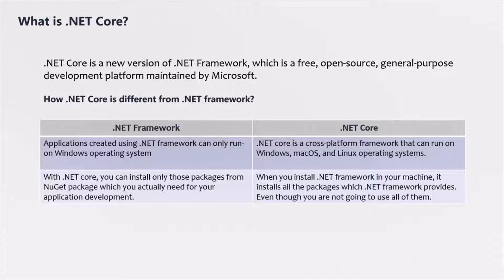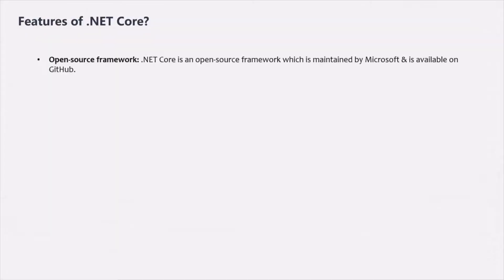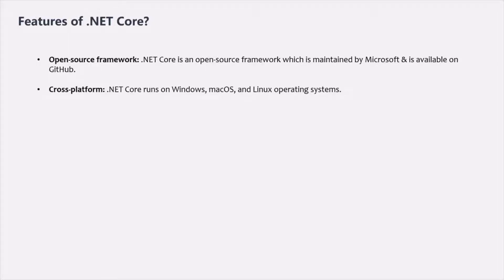Let's see some of the features of .NET Core. First of all, .NET Core is an open source framework maintained by Microsoft and is available on GitHub. You can view, download, or contribute to the source code on its GitHub repository. .NET Core runs on Windows, Mac OS, and Linux. There is a different runtime for each operating system that executes the code and generates the same output, making .NET Core cross-platform.